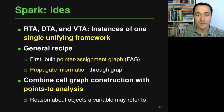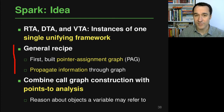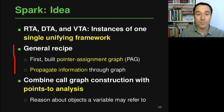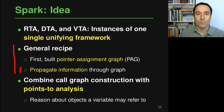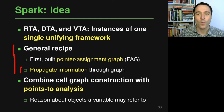For any of these algorithms, the general recipe to construct a call graph is the following. The analysis first builds a graph representation of the code called the pointer assignment graph. Then it propagates information through this graph, which eventually tells the analysis what types particular variables may have and, as a result, where the calls on these objects may actually go.